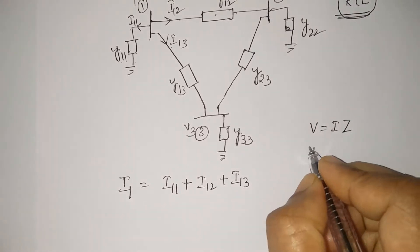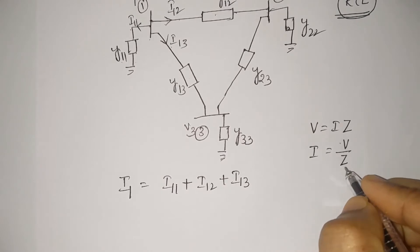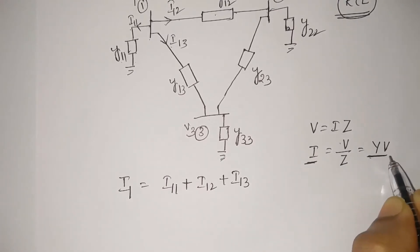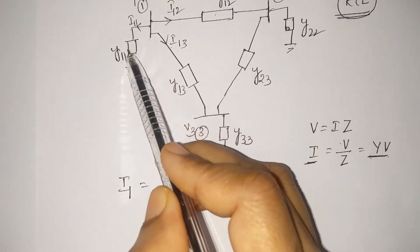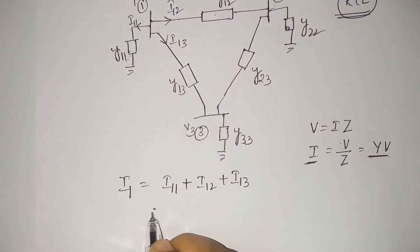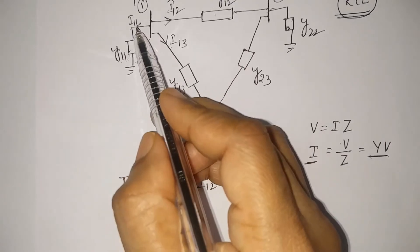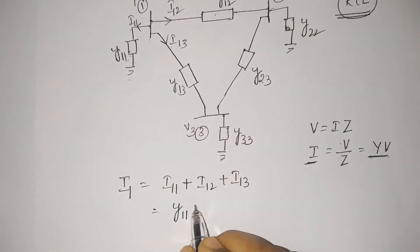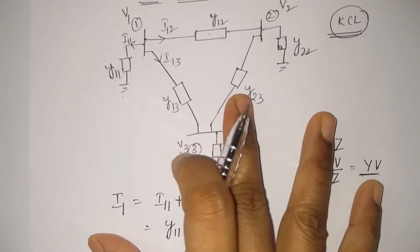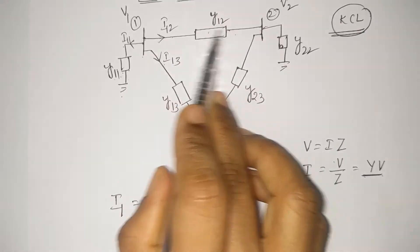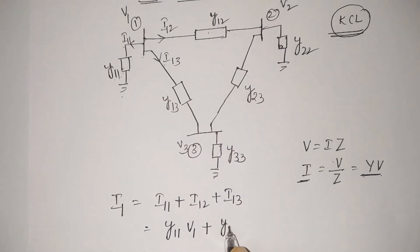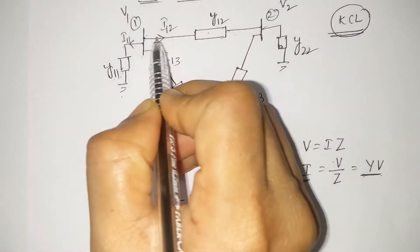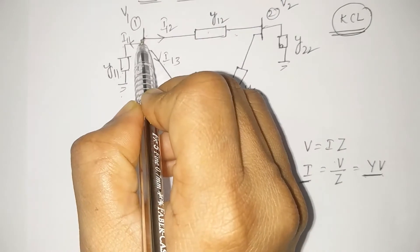As we know from Ohm's law, V equals IZ, so I equals V/Z, which can be written as I equals Y times V. So current is the product of admittance and voltage. For I11, the admittance is y11 and the voltage across the branch is V1 minus 0, which equals V1. For I12, the admittance is Y12 and the voltage across the branch is V1 minus V2.